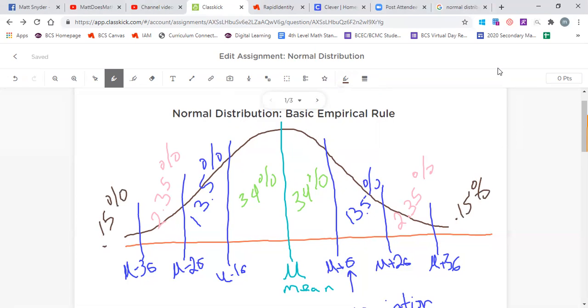Sometimes you'll see this rule as called the 68, 95, 99.7. So 68, 95 and 99.7.